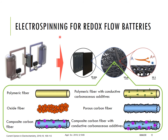Electrospinning can be used to fabricate nanofibers that are employed as electrodes for redox flow batteries. Here is a sketch of different electrospun fiber types fabricated by different researchers, all with potential to be used as electrodes. The fibrous morphology can be solid polymeric fibers, solid oxide fibers, composite carbon-polymeric fibers with conductive additives, porous carbon fibers, or composite carbon fibers with different additives — conductive or non-conductive depending on the required electrode performance.